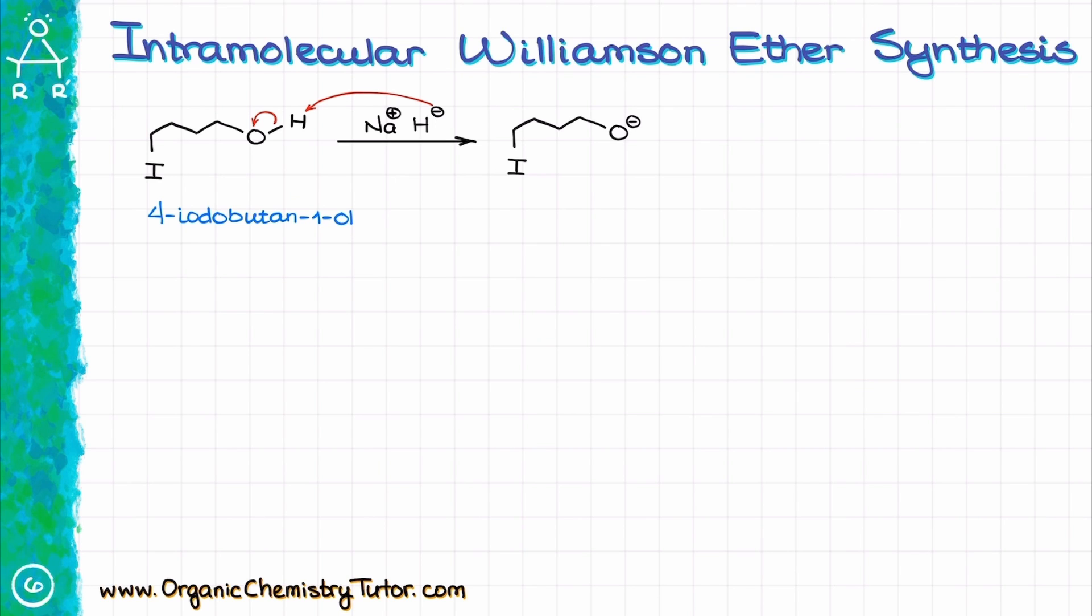Then, the resulting alkoxide will react with itself, replacing the iodine in the intramolecular SN2 reaction, yielding me a 5-membered ring with an oxygen atom in it. And to make it a little bit easier to see how exactly that happened, I'm going to number my atoms. 1, 2, 3, 4, 5, like that, and here, atom number 1, the oxygen, attacked atom number 5, which is my carbon, displacing the iodine.